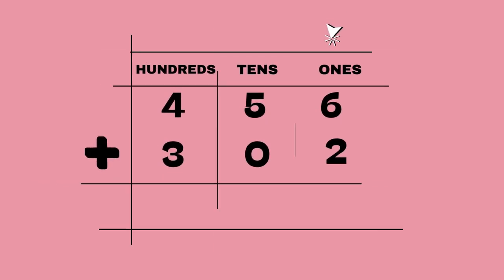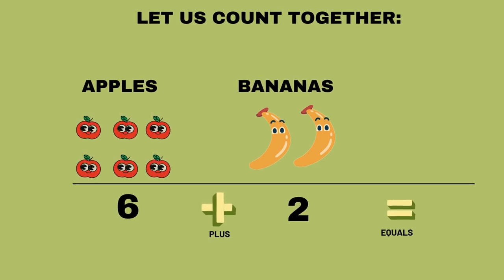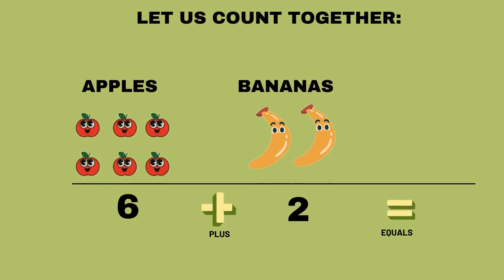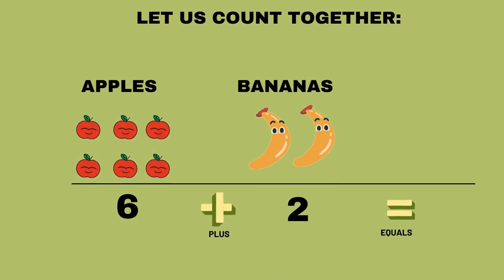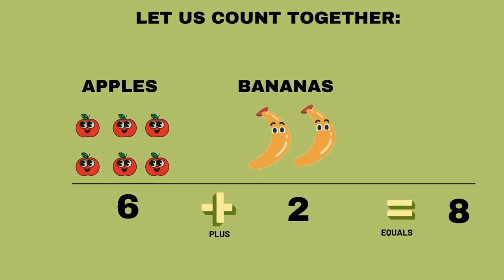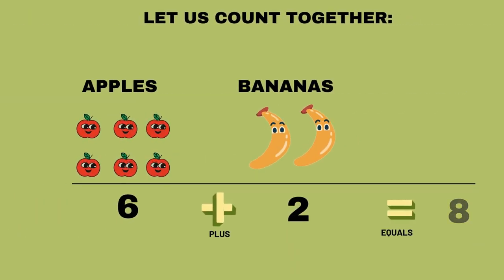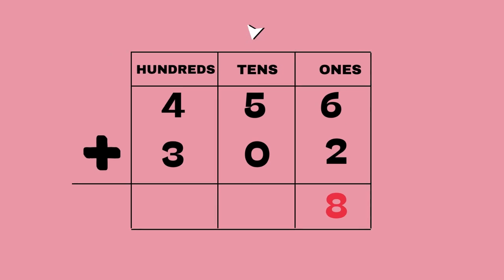First, let's start with the ones column. Six apples plus two bananas equals... let's count: one, two, three, four, five, six, seven, eight. We have eight fruits, so our answer is eight. Excellent. Now let's move on to the tens column.